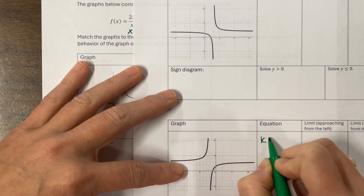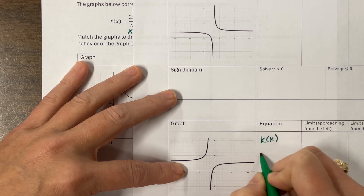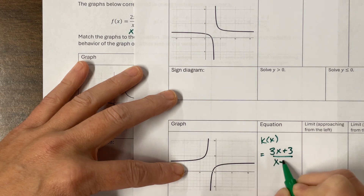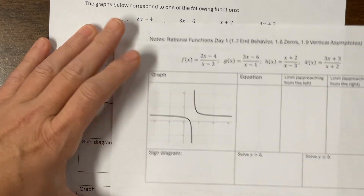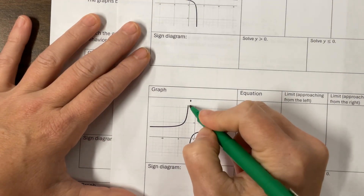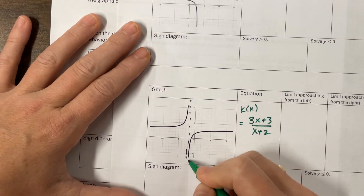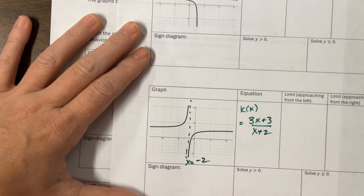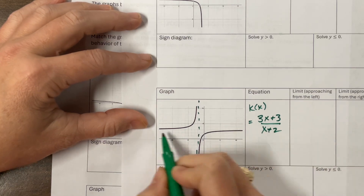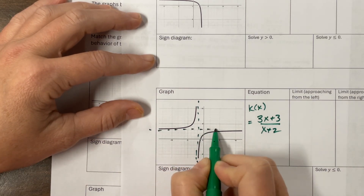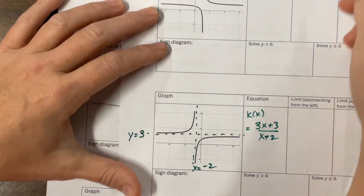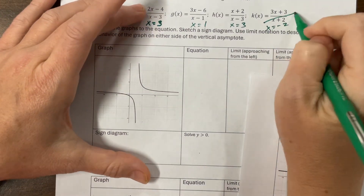So this one would be k of x, which is equal to 3x plus 3 over x plus 2. It's right up here — I told you it was one of these four. This is the one that has an asymptote at x equals negative 2. Do you see this vertical asymptote at x equals negative 2? So that has to correspond with this one. And then I divide my leading coefficients to find that this has an asymptote of y equals 3. So one down — we have used k for one of these.